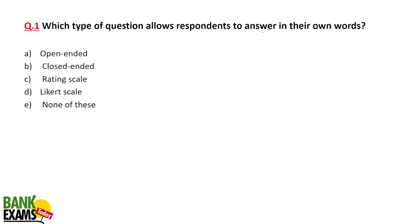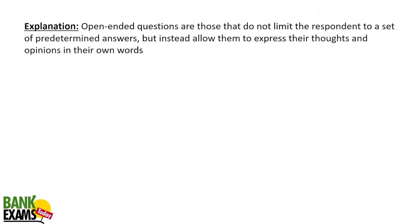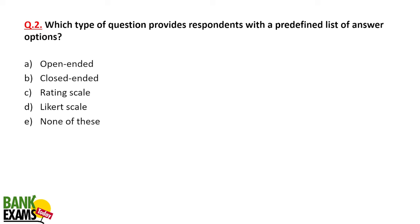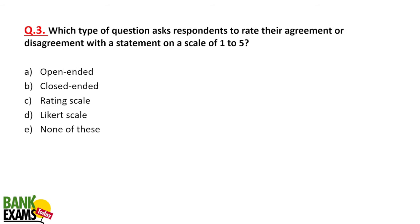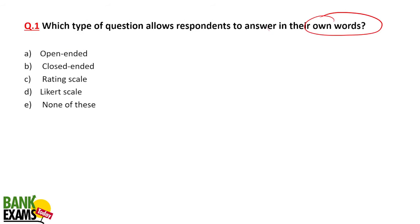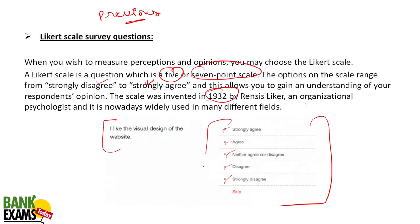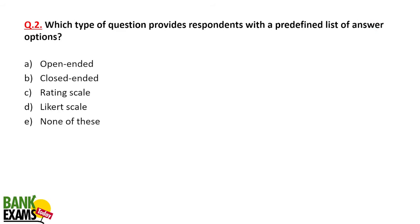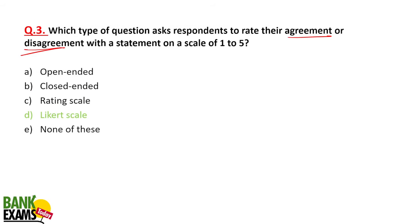Key exam questions to remember: Which type of question allows respondents to answer in their own words? — Open-ended questions. This comes most frequently in the paper. Which type of question provides the respondent with a predefined list of options? — Close-ended. Which type of question asks respondents to rate their agreement or disagreement with a statement? — Likert scale. Please check the keywords: agreement or disagreement in five or seven points — that is Likert scale. These questions are very important.